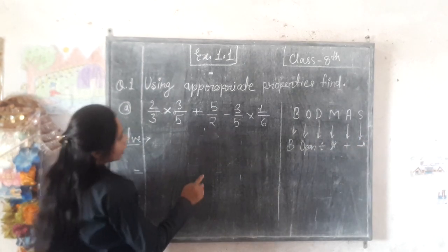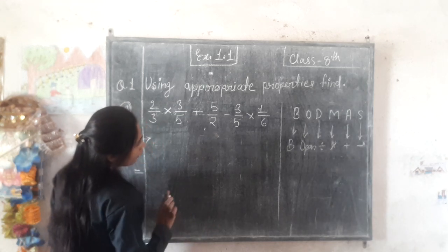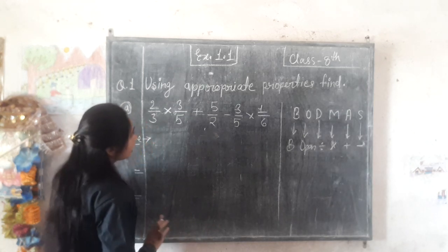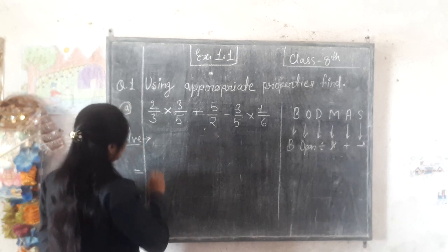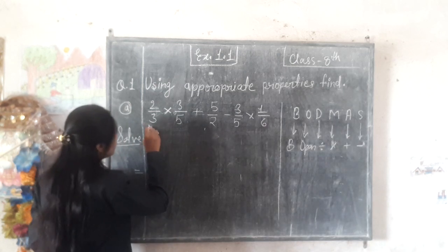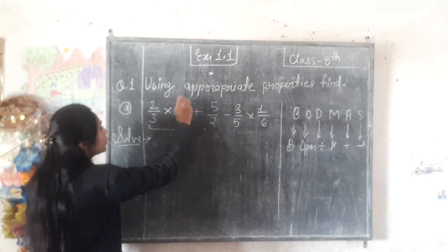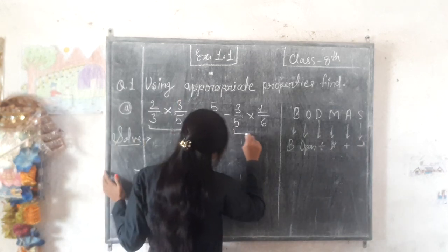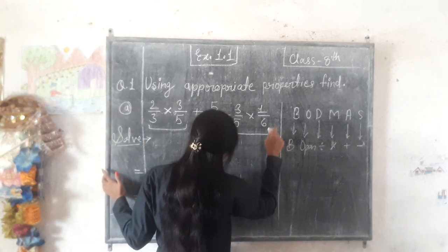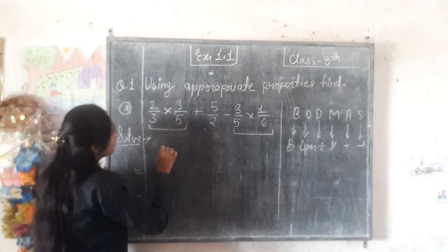Sabse pehle hum bracket dekhte hain. Bracket mein hai, phir divide bhi nahin hai. Hum yahan dekhte hain: 2 by 3 into 3 by 5 and 3 by 5 into 1 by 6.